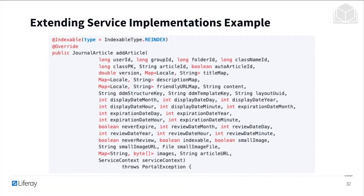Here's an example of extending a service implementation. For example, with journal articles, if you want to add an article you might include all of the relevant fields for an article entity. You'll start with the user ID and group ID, then include all of the relevant parameters. Within the method definition you might manipulate this data, create an entity, and then add it into the database.